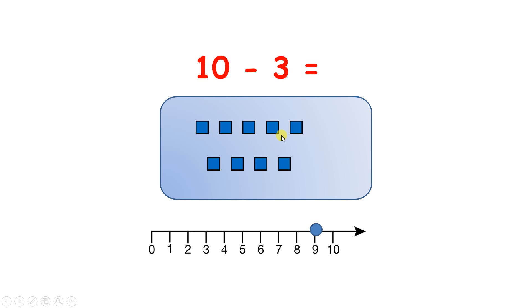But that's minus 1, so we need to take away another. So I've jumped back again. And 1 more means we've taken away 3, so we've jumped back again. So I've made 3 jumps back on my number line, and I've landed on the number 7.